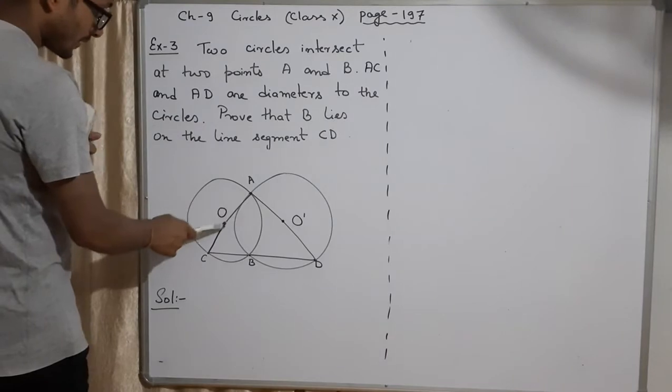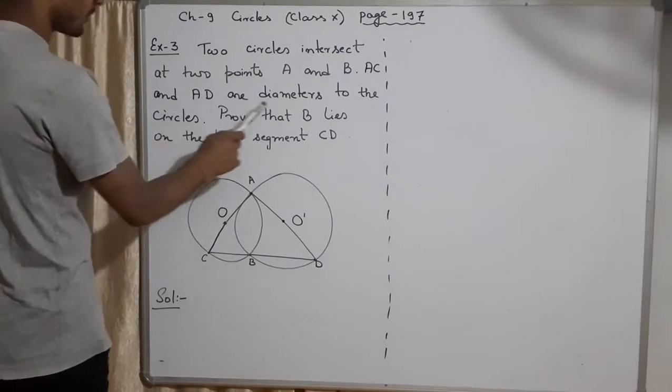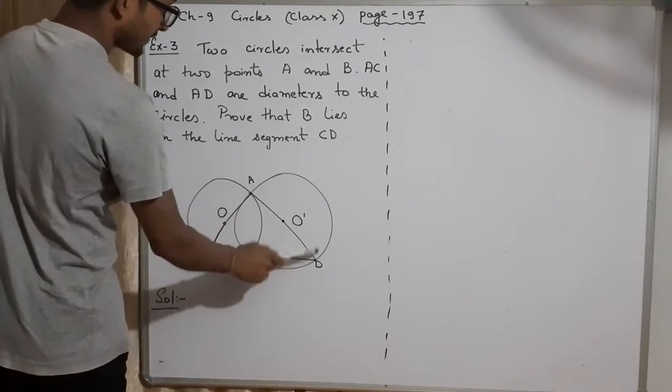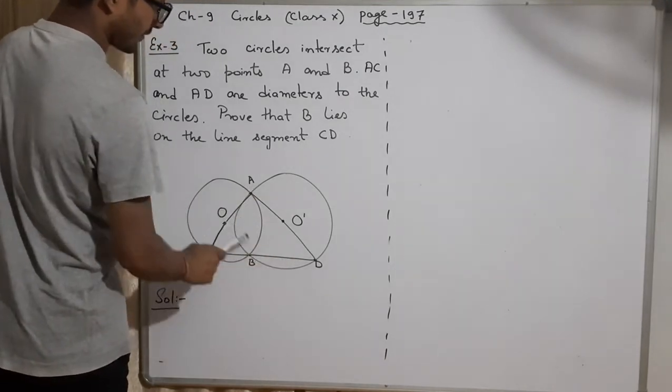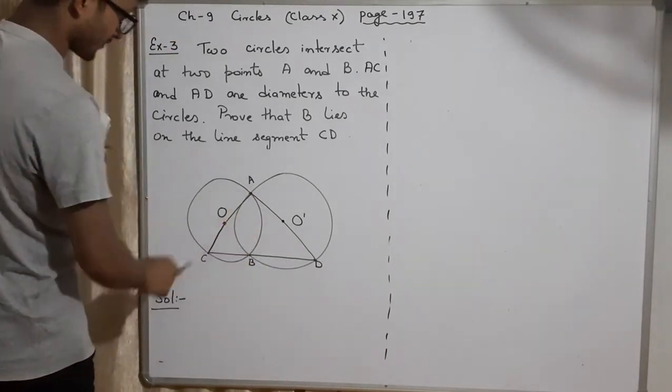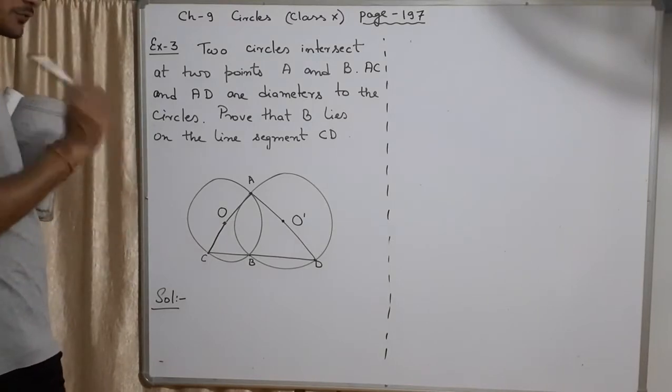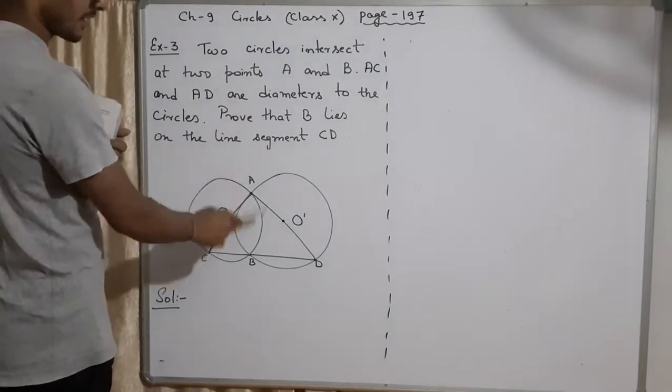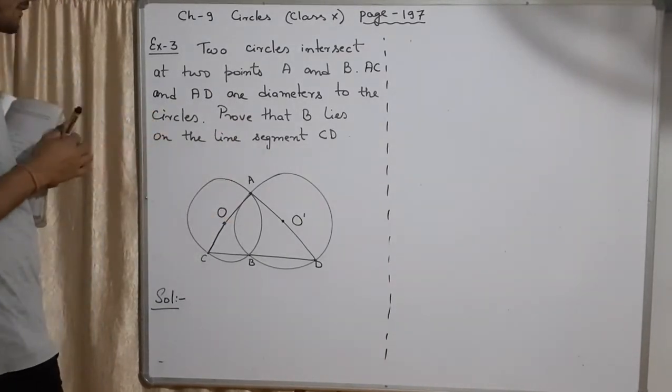Now, out of them, AC is the diameter of the first circle, this circle. And AD is the diameter of this circle. Diameter means passing through the center. So they will have two different centers here, O and O'. It is not written here O and O' because diagram is given in the question.